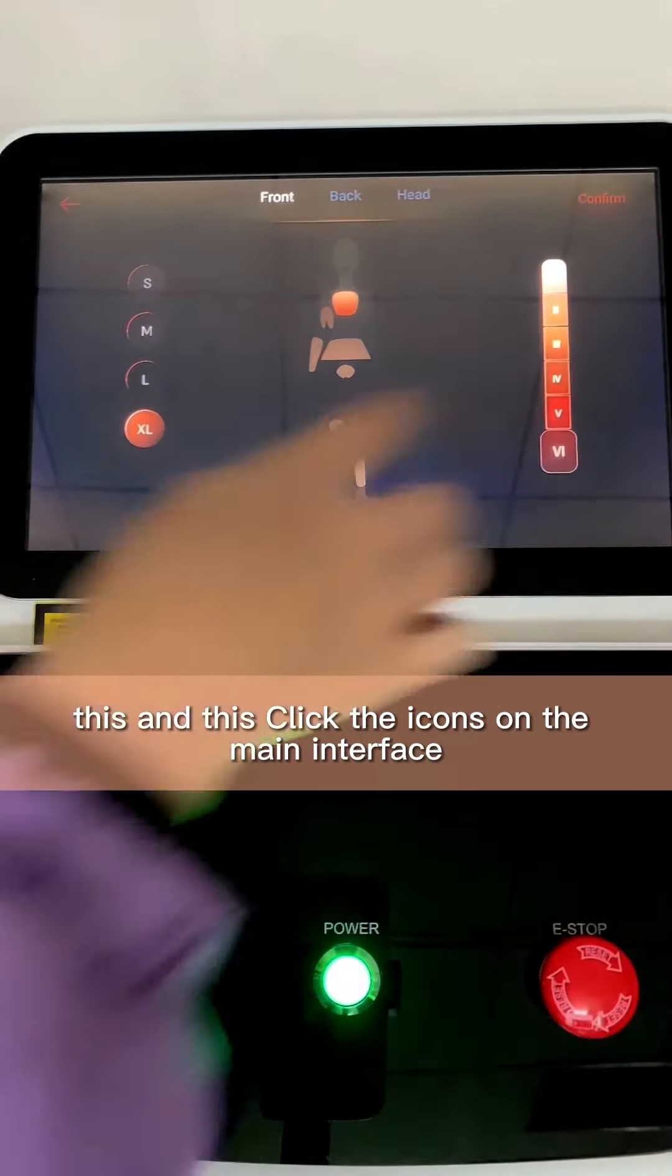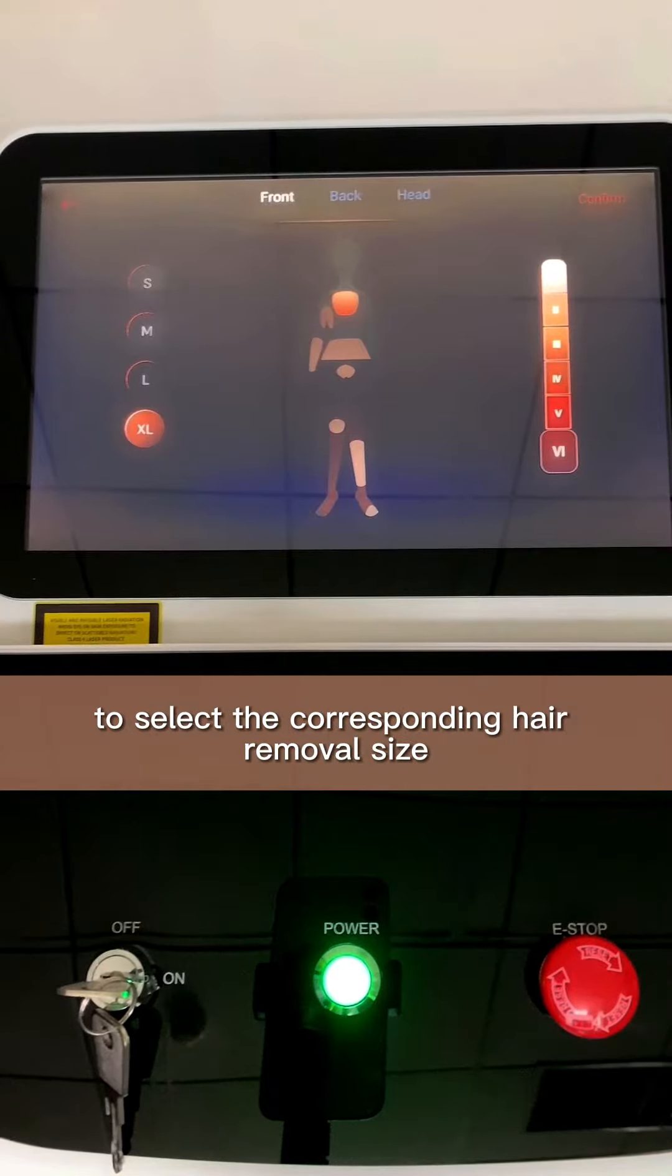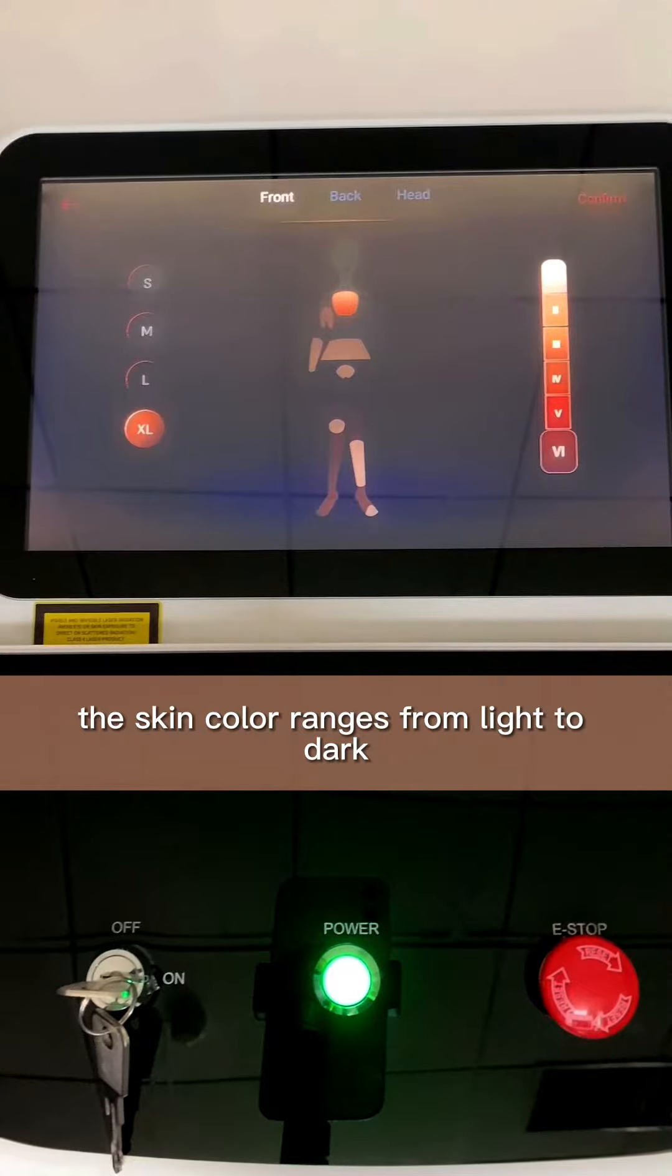This, this. Click the icon on the main interface to select the corresponding hair removal settings, hair removal area, and skin color. The skin color ranges from light to dark.